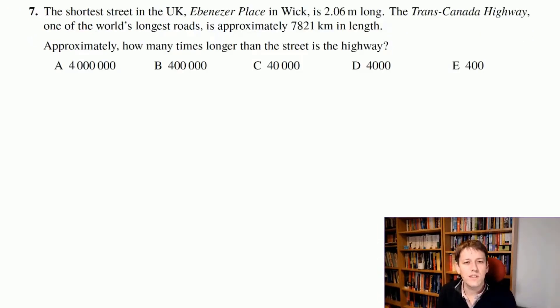So the shortest street in the UK, Ebenezer Place in Wick, is 2.06 meters long. That's tiny, isn't it? That's a real place by the way, you can Google it and see pictures. The Trans-Canada Highway, one of the world's longest roads, is approximately 7,821 kilometers in length. That's enormous.